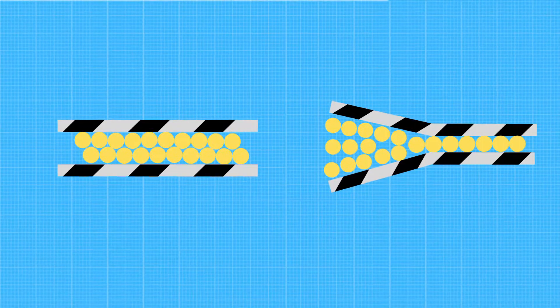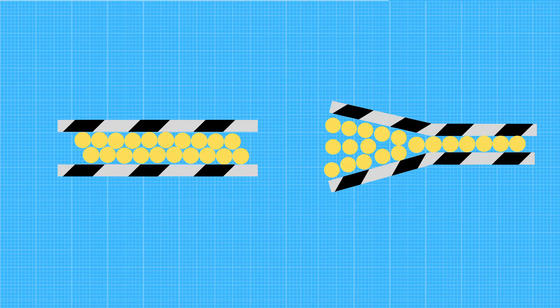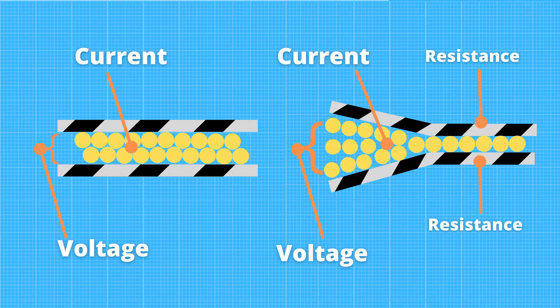A resistor is a passive two-terminal electrical component that implements electrical resistance as a circuit element to limit the flow of electric current.